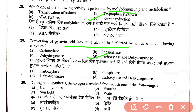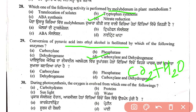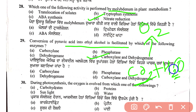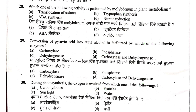Question 30: during photosynthesis, oxygen is evolved from which source? In photosynthesis, carbon dioxide and water are the raw materials. The question is — what is the source of oxygen? The source of oxygen evolved during photosynthesis is the water molecule. Answer is B.